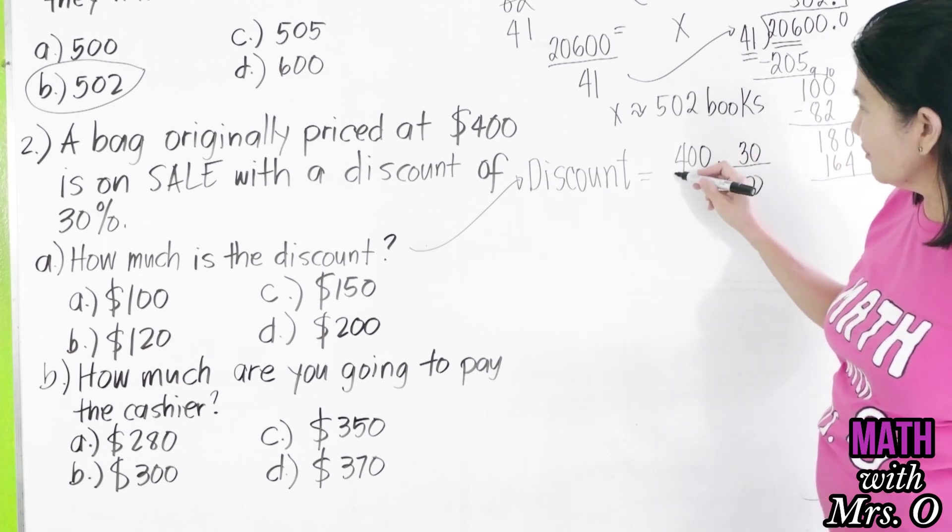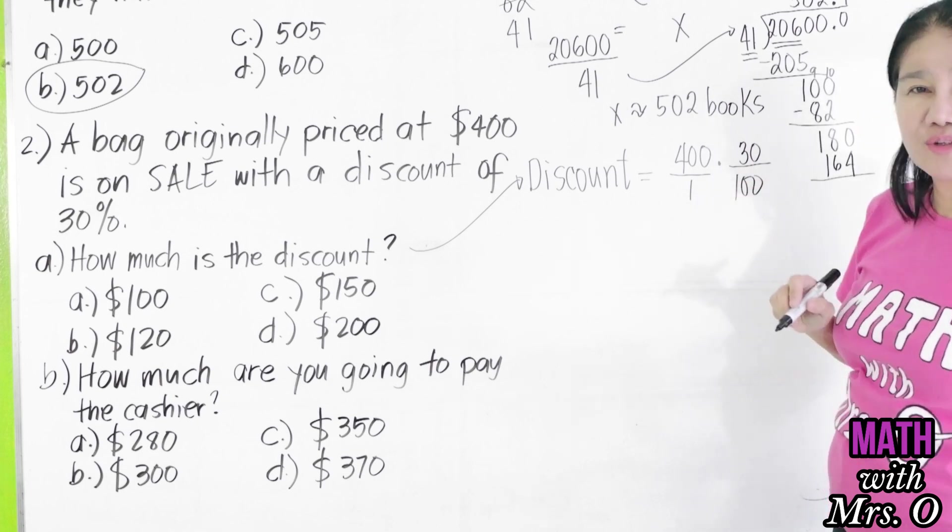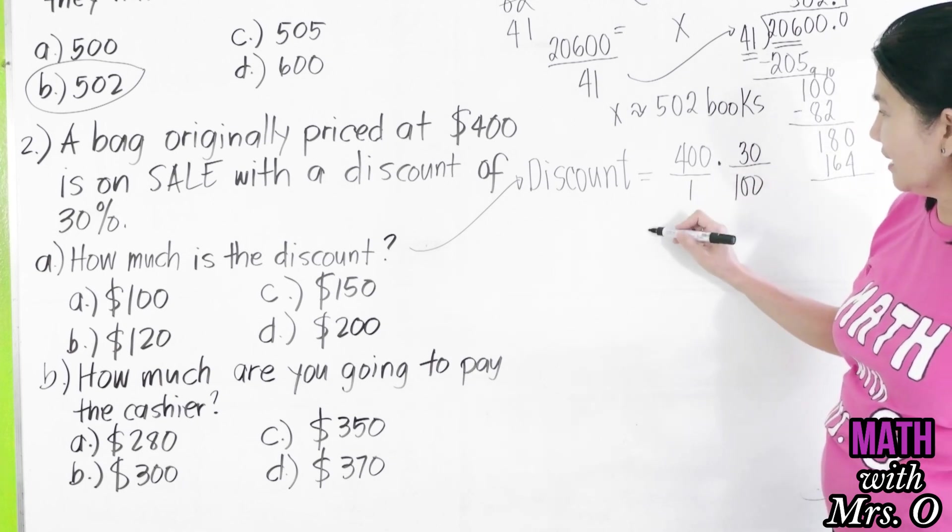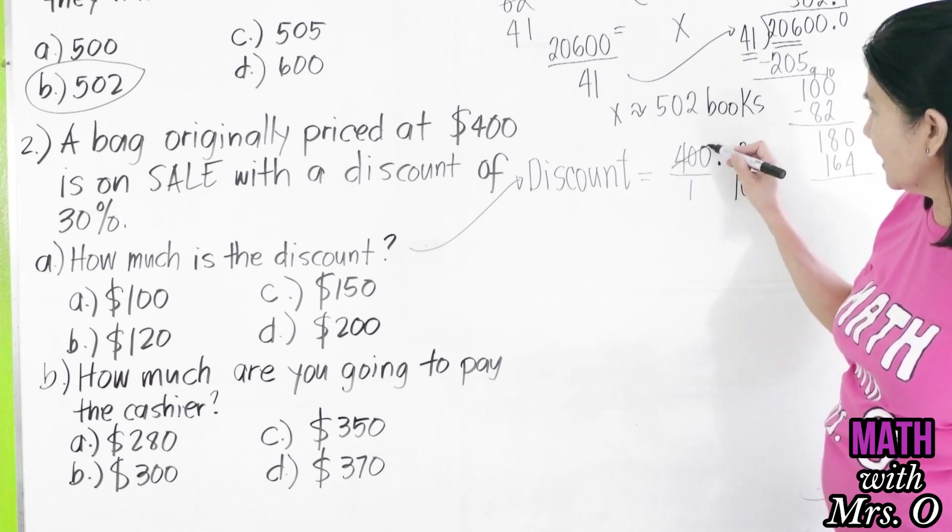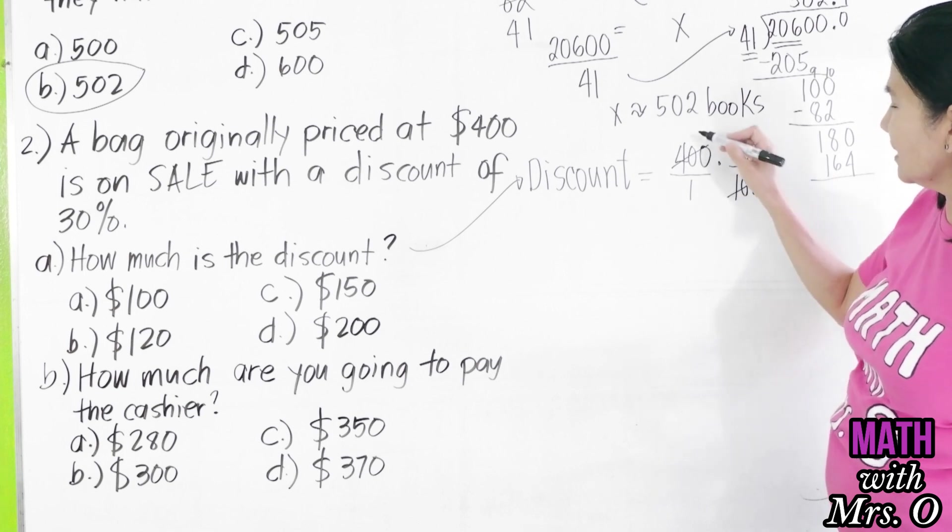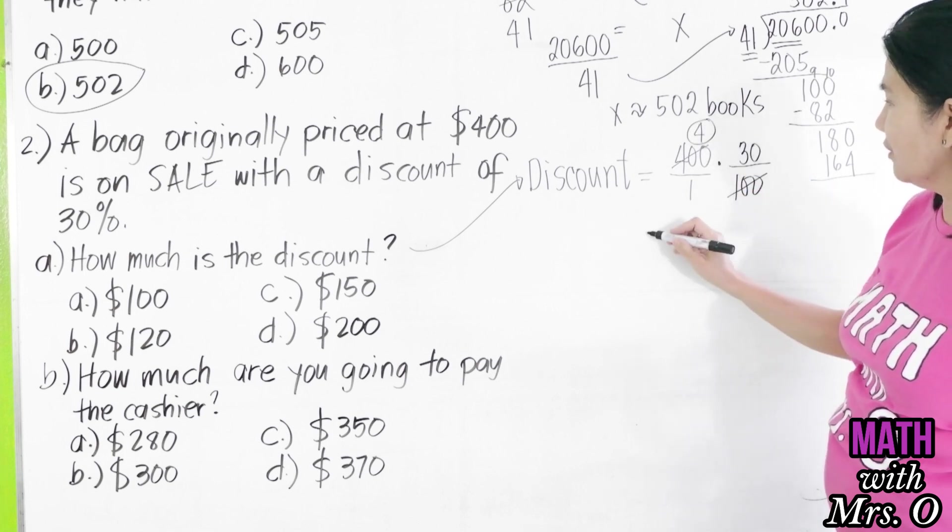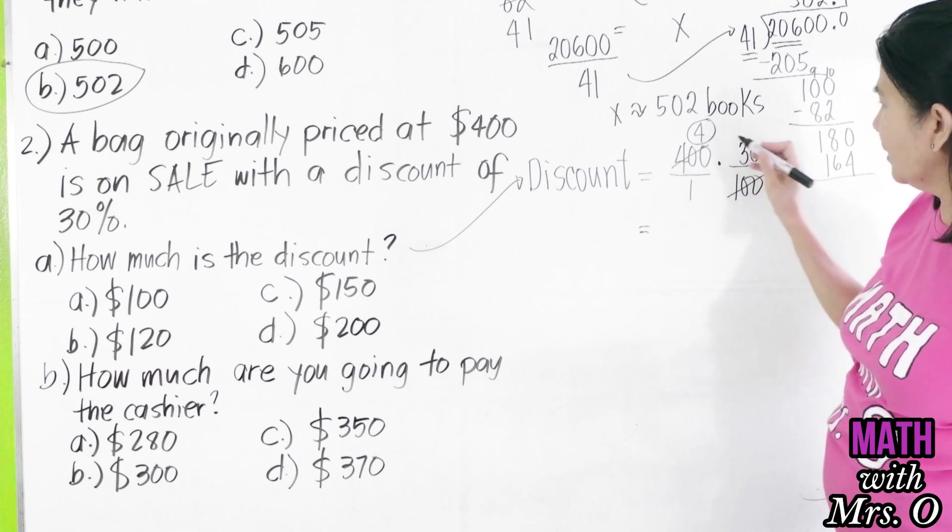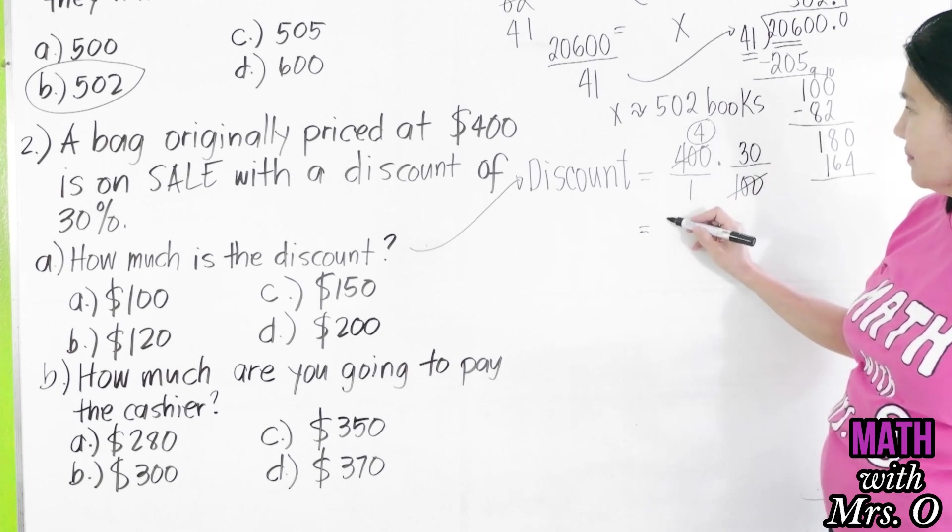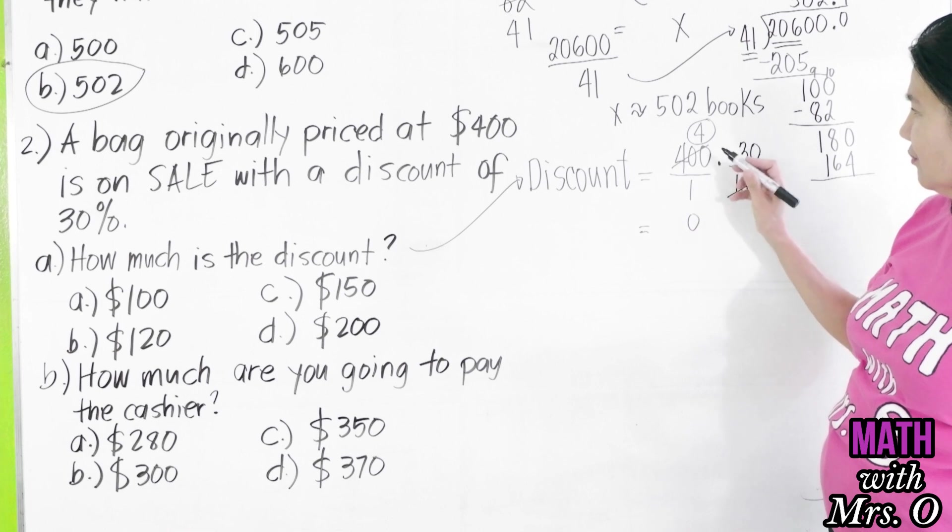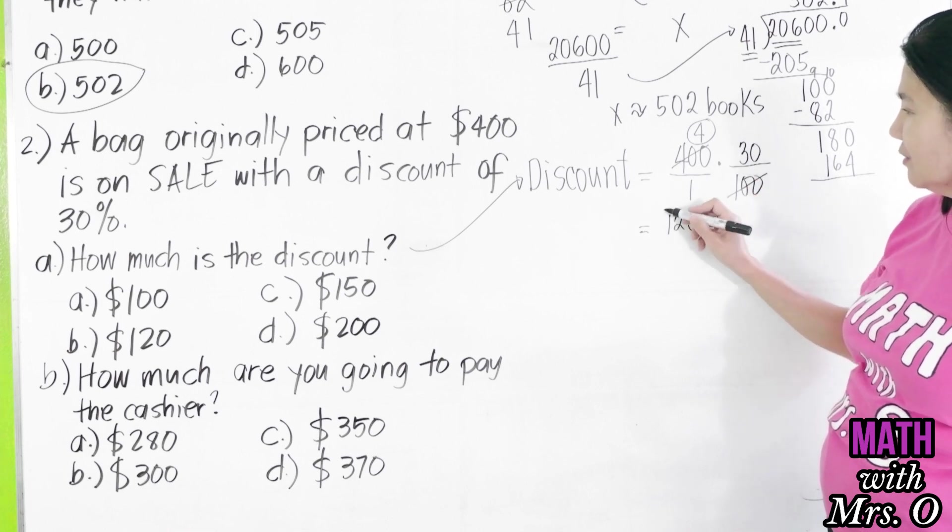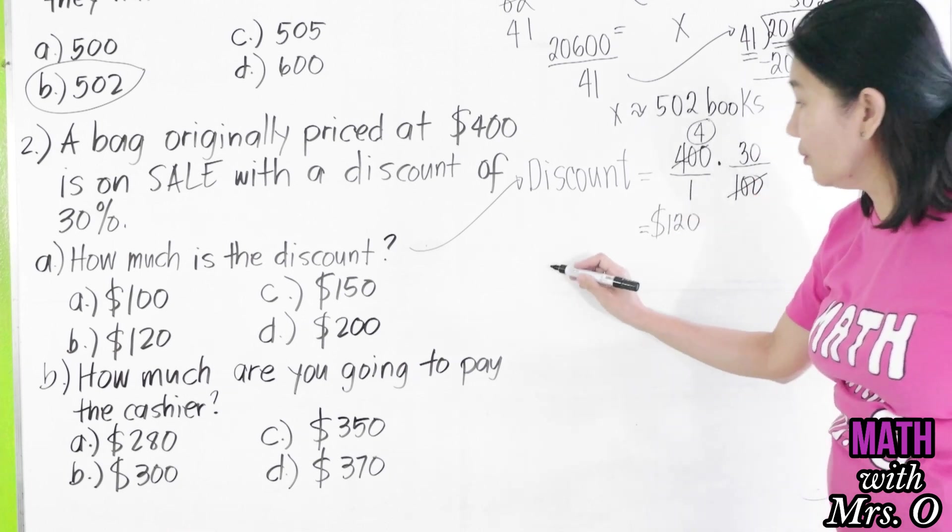We know that 400 is just 400 over 1. So, you can now cancel this. 400 divided by 100 is 4. You're left with 4. Therefore, 4 times 30 is, 4 times 3 is $120. Or,